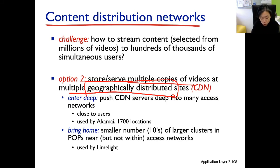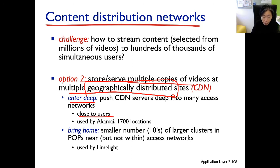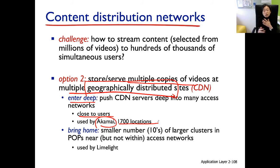Let's talk about the two models CDNs use to architect their physical infrastructure. The first one is called 'Enter Deep.' This means the infrastructure — the machines storing these videos — are placed deep, closer to the end customers, deep into the ISPs, into the local ISPs. Akamai, one of the oldest companies, implements exactly this architecture. Therefore there are many locations in Akamai's network. For each local ISP, Akamai typically sets up a site — a rack of workstations — redundantly connected to other machines and routers in the access network, very close to the users.